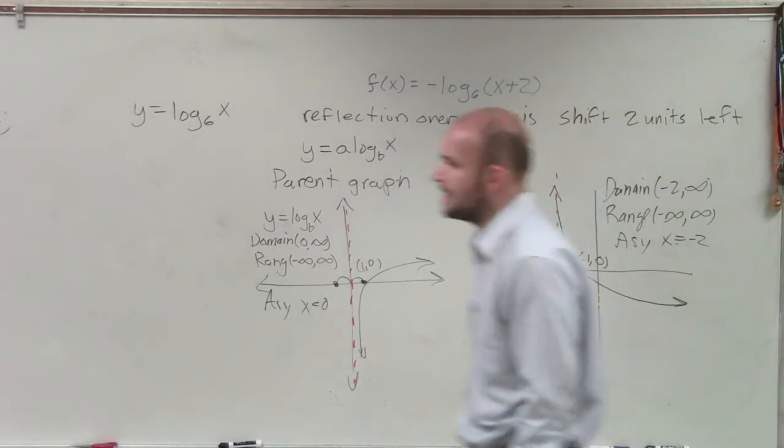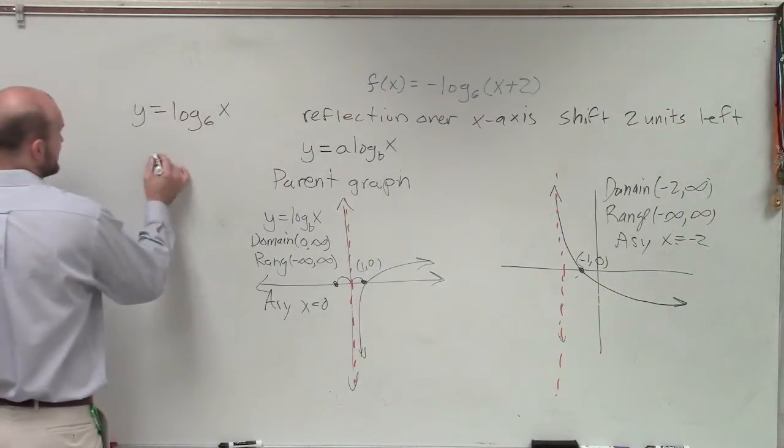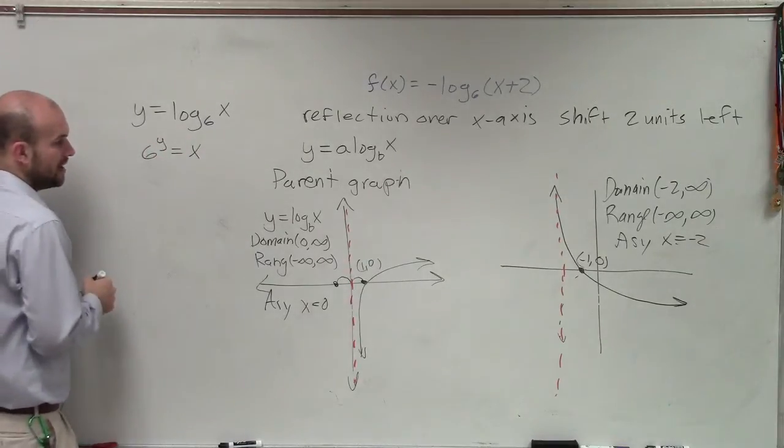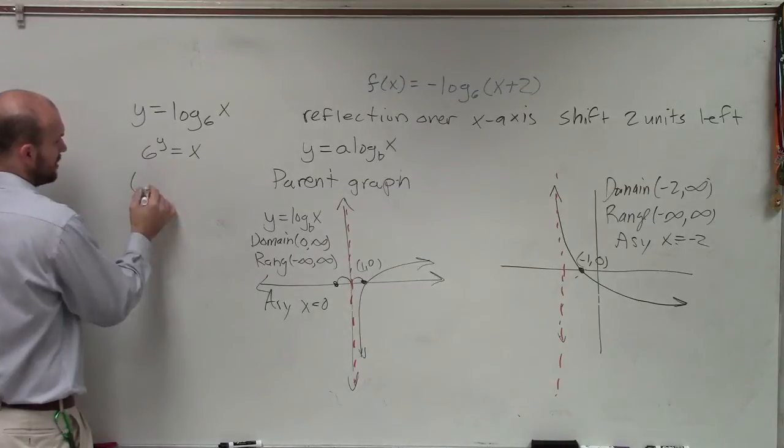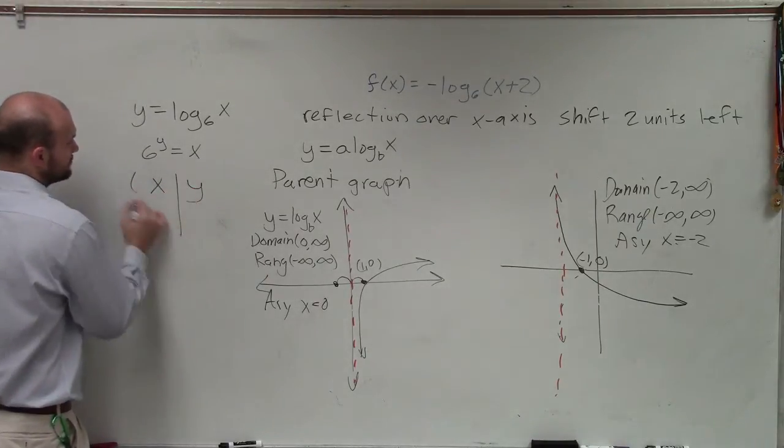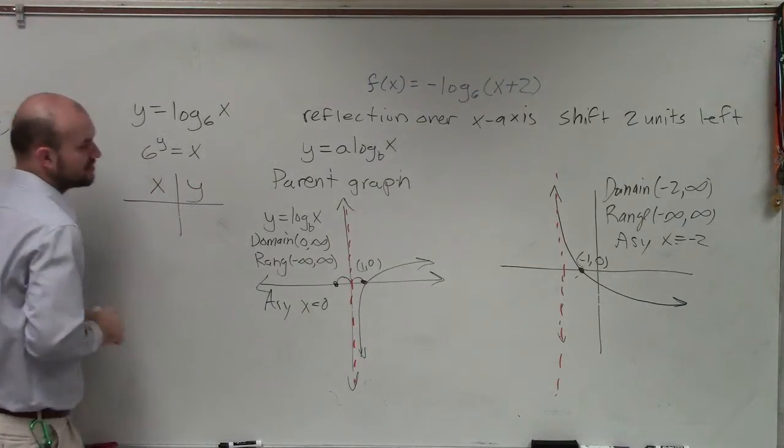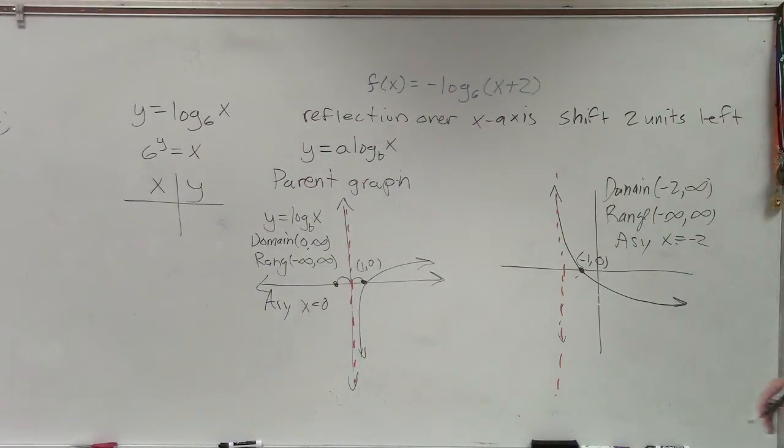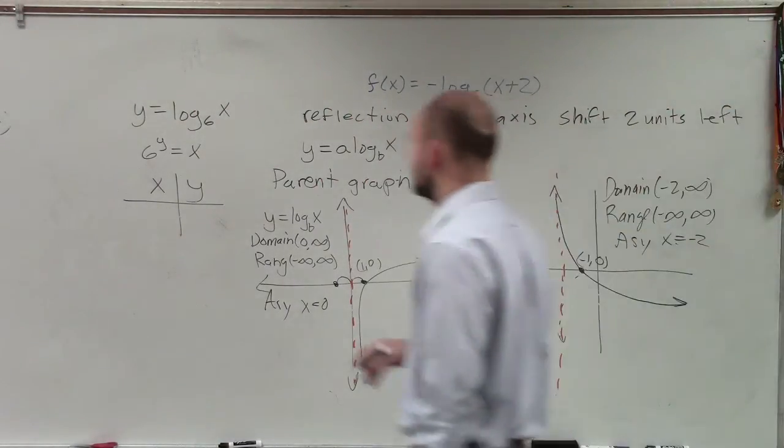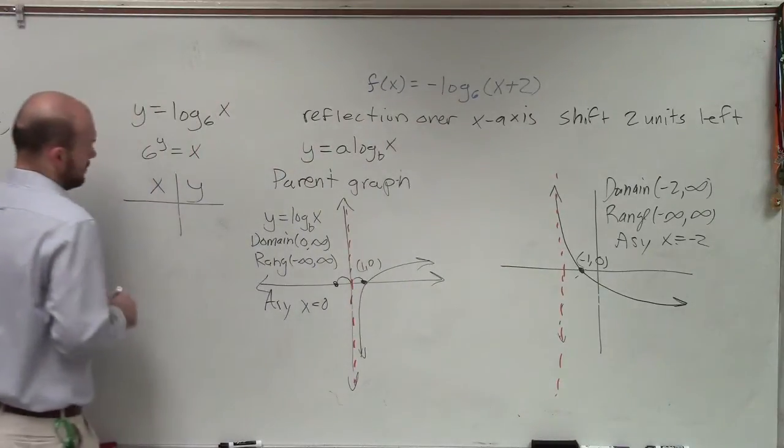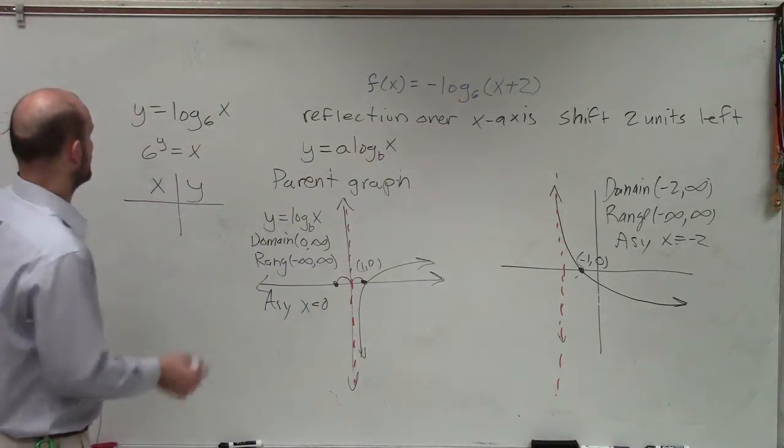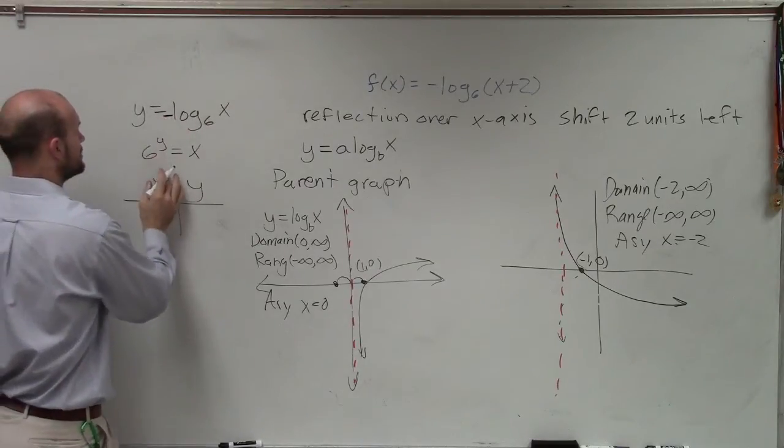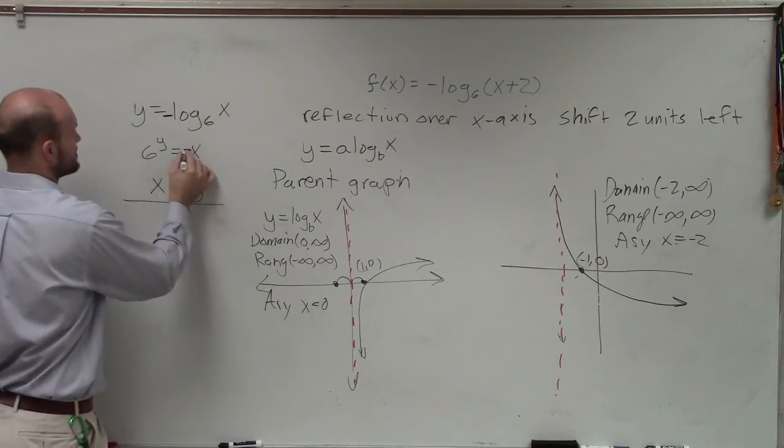And if you guys look at this, you could say rewrite this in exponential form, 6 to the y equals x. Right? We already know that if I did an xy table, and this is something you guys could use with a calculator or not, but we already know when y equals 0, x equals what? y equals 0. Oh, I'm sorry. That's a negative. So let's keep that negative there. 6 to the equals negative x. Sorry.